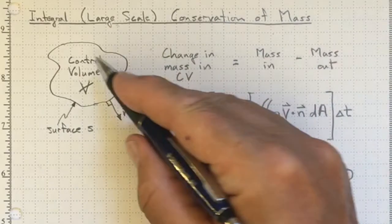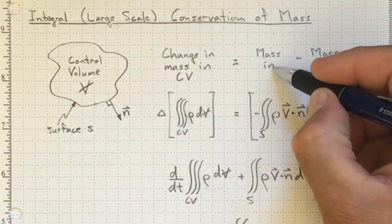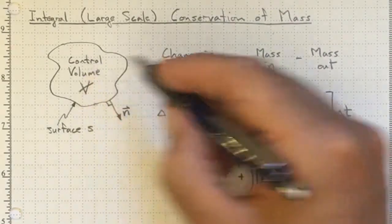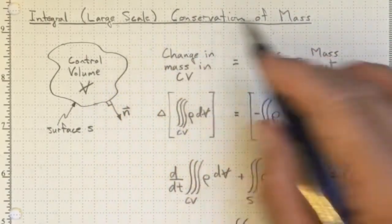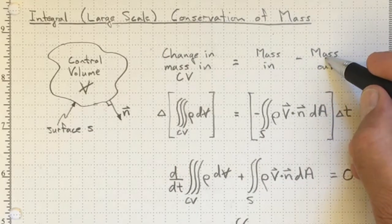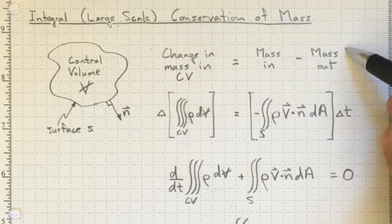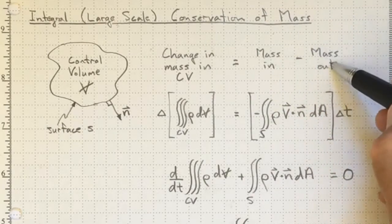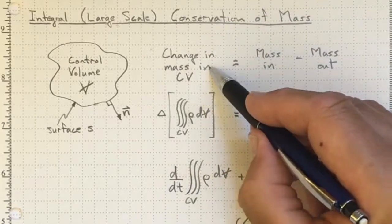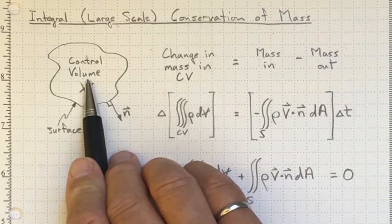So the change in the amount of mass inside the control volume will be equal to the mass flow into the control volume minus the mass flow out of the control volume. That's just an expression in words of what we mean by conservation of mass. If more mass goes in than goes out, there'll be a positive increase in the amount of mass inside that control volume.